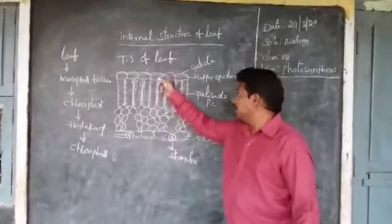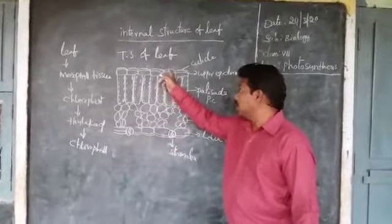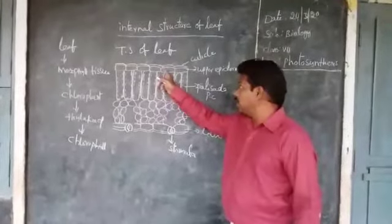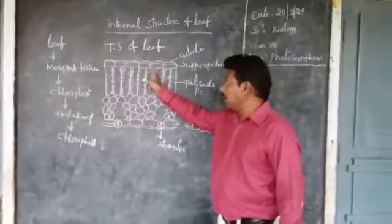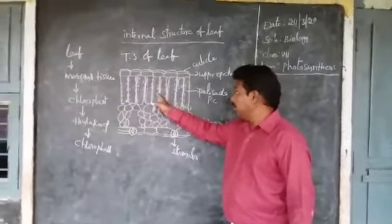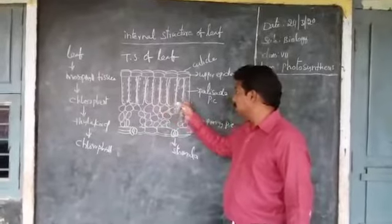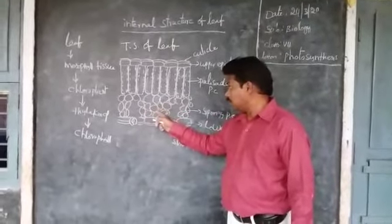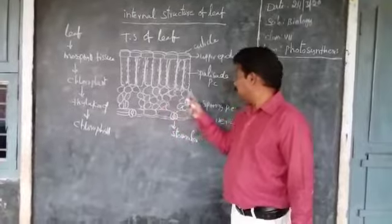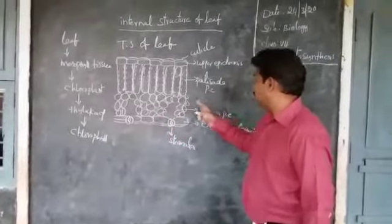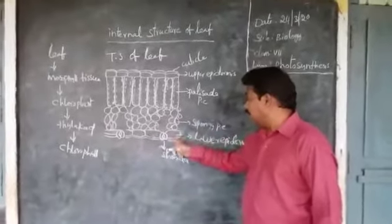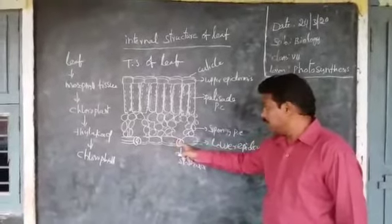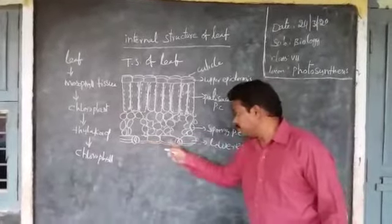See this diagram — some parts are there. This cuticle — the outermost layer of the leaf is called cuticle. After that, upper epidermis, then the palisade parenchyma. See this — this is the palisade parenchyma. And the round cells are called spongy parenchyma. And here is the lower epidermis. On the lower epidermis, you can see stomata here — stomata.